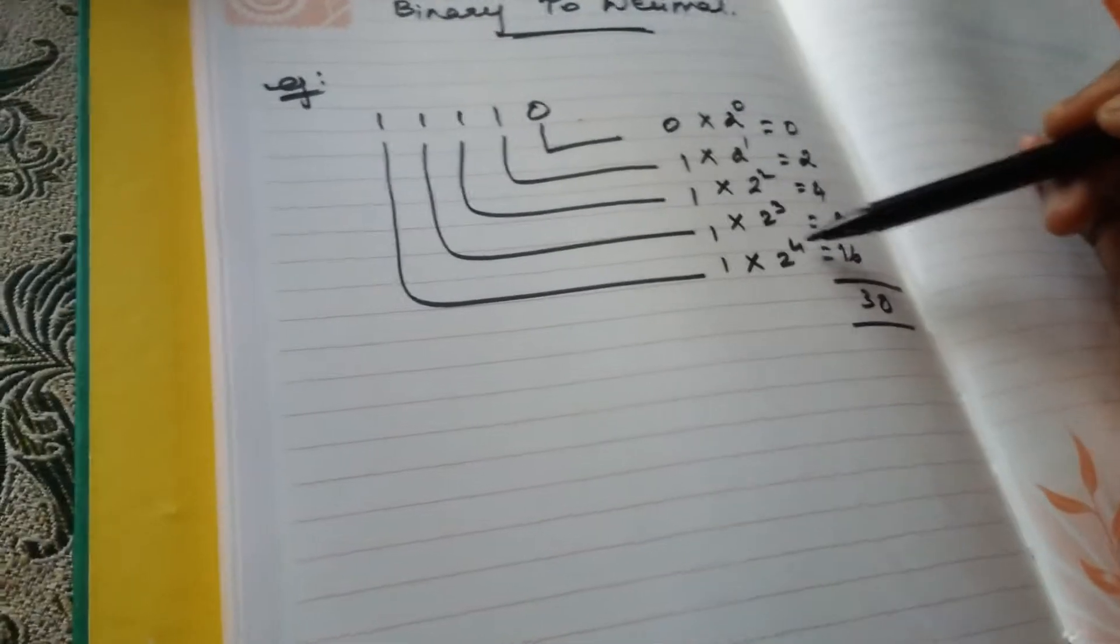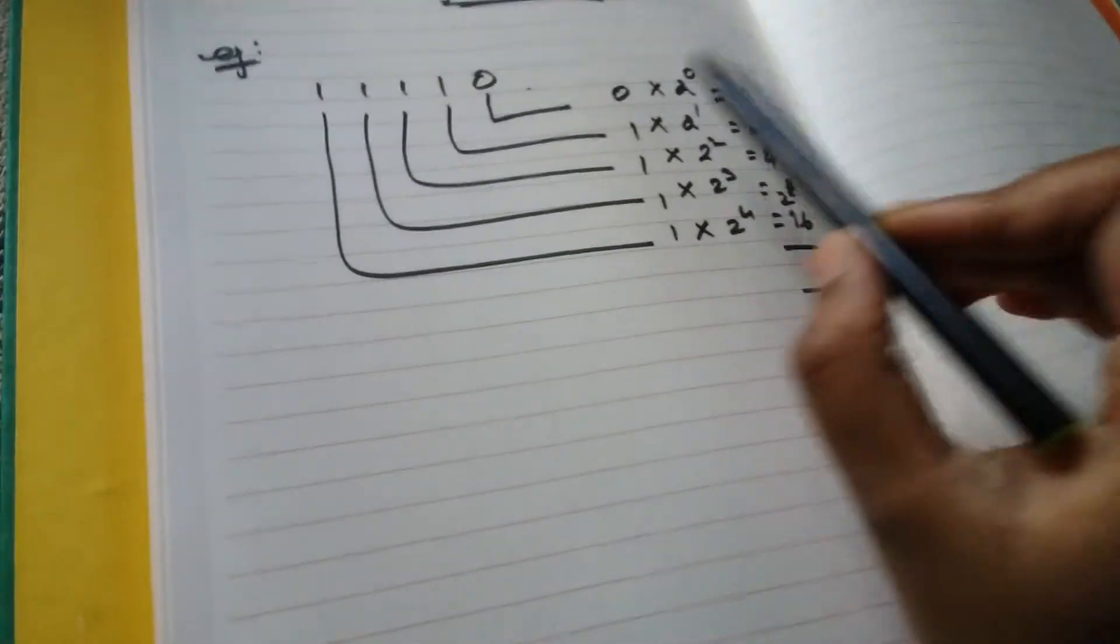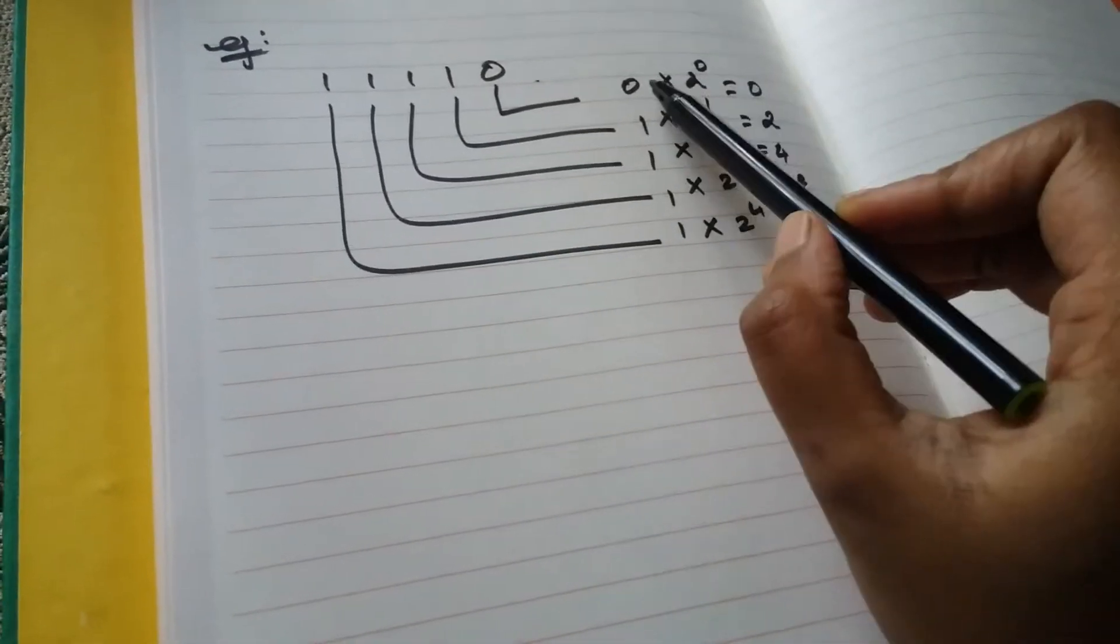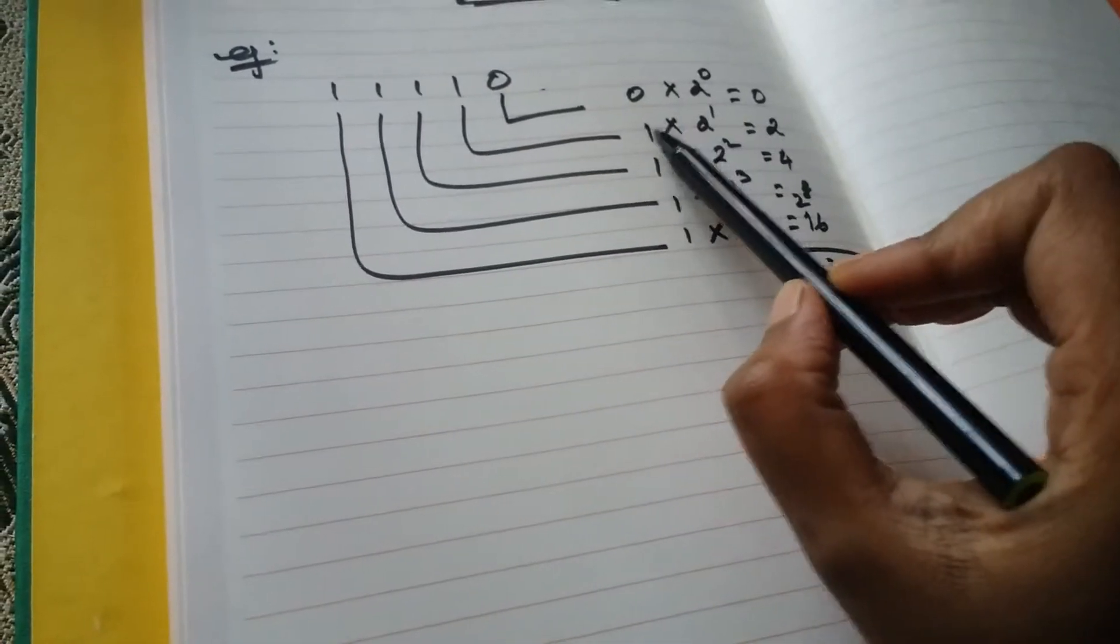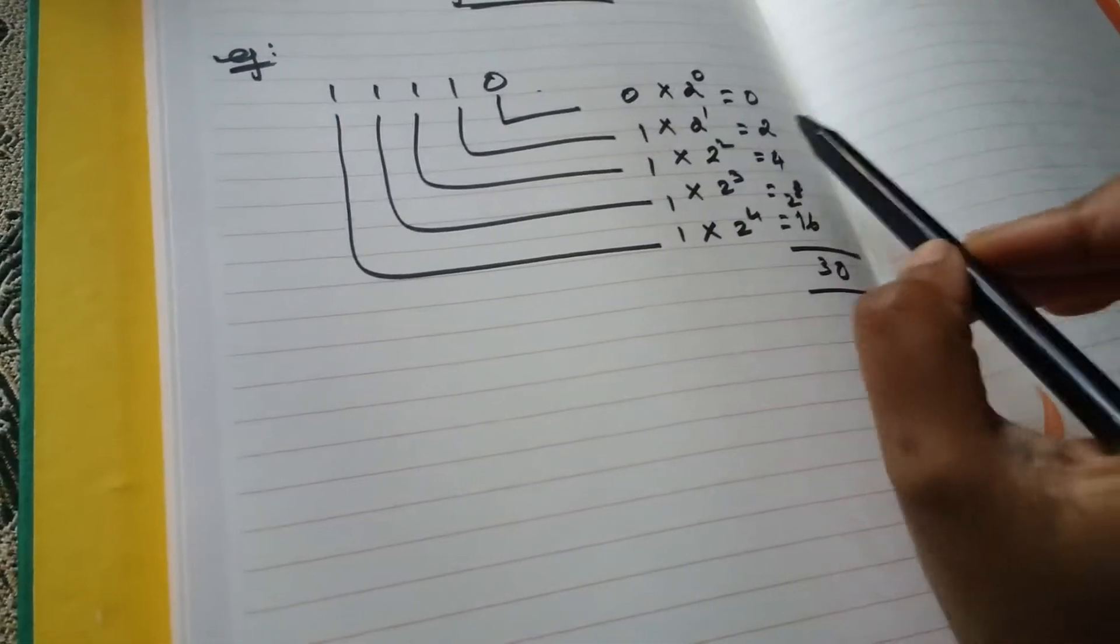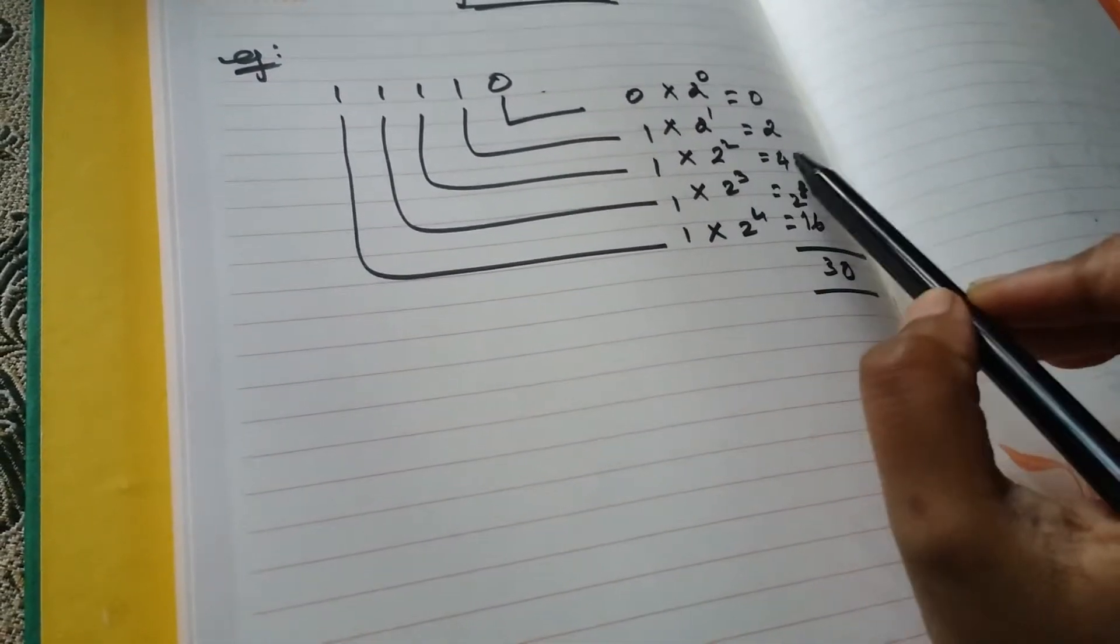So just multiply it. Zero into anything is zero. Then one into two power one is two. One into two power two is four.